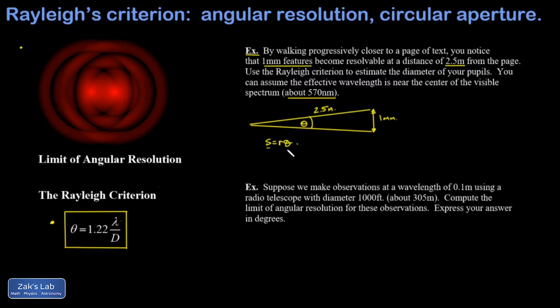This is going to give you the angle in radians, which is convenient because that's what we're plugging into the Rayleigh criterion. So I get s over r—that's one millimeter over two and a half meters—and this gives me an angle of four times ten to the negative four radians.